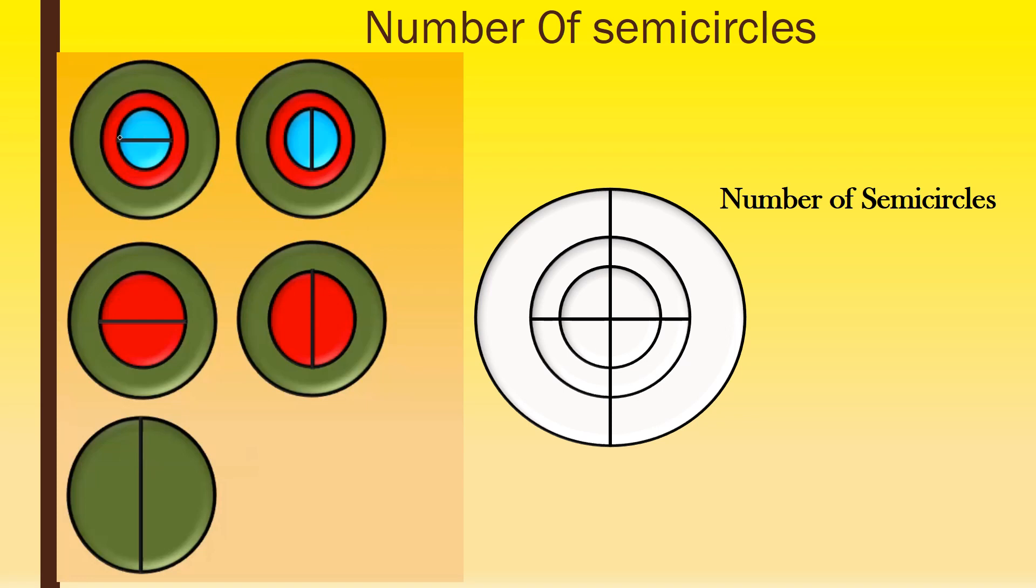A semicircle is a half circle formed by cutting a whole circle along a diameter. It's a diameter so it cuts into two semicircles, one at the top and two at the top. Then by this diameter line, another two semicircles, that is three and four.